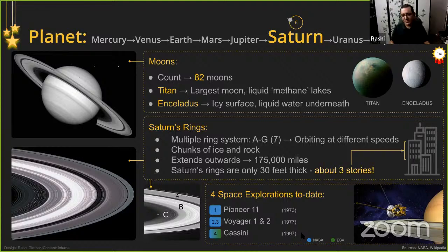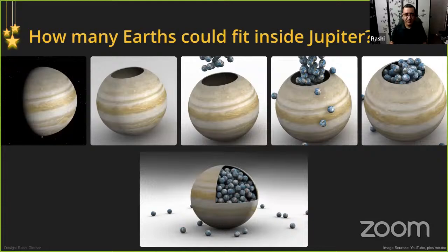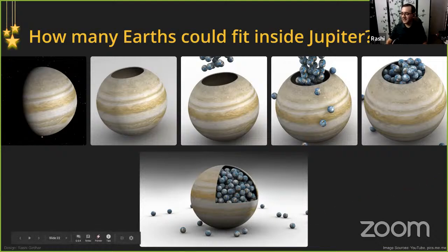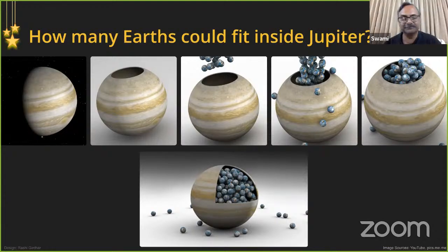Jupiter's diameter is roughly about 11 Earth widths, and Saturn's diameter is roughly about 9.5 Earth widths. I have a question for folks on the stream: if Jupiter was a big ball that we could fill up with Earth-sized marbles, how many Earths could actually fit inside Jupiter? I don't want you to Google it — take a stab and put your guess in the comments. Swamy, can you help us see if anybody responds?